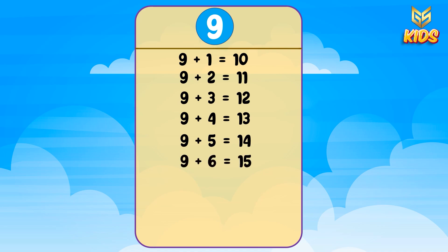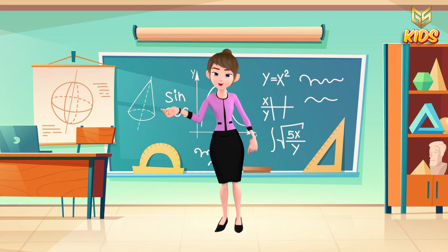9+7=16, 9+8=17, 9+9=18, and 9+10=19. I hope you have understood the table number 9. If not, go and repeat the video again.